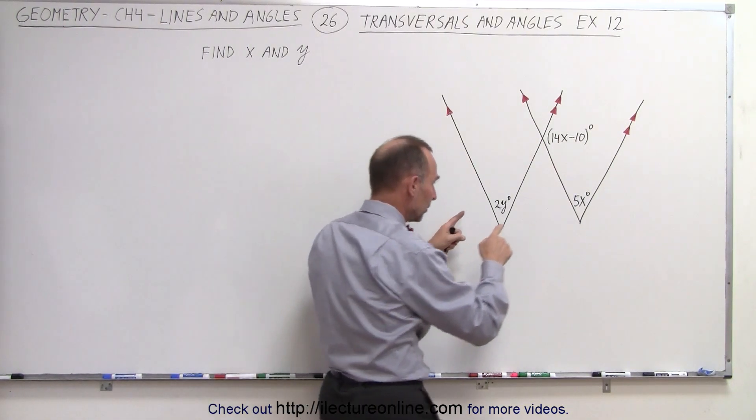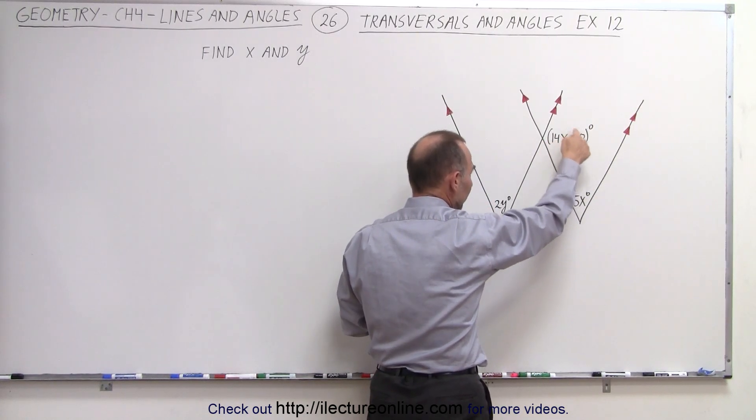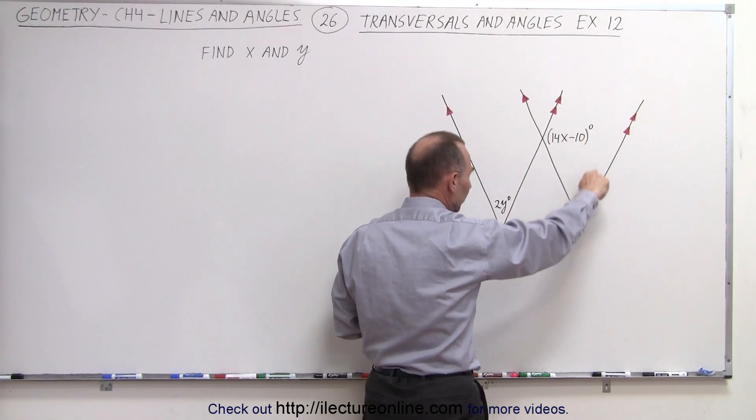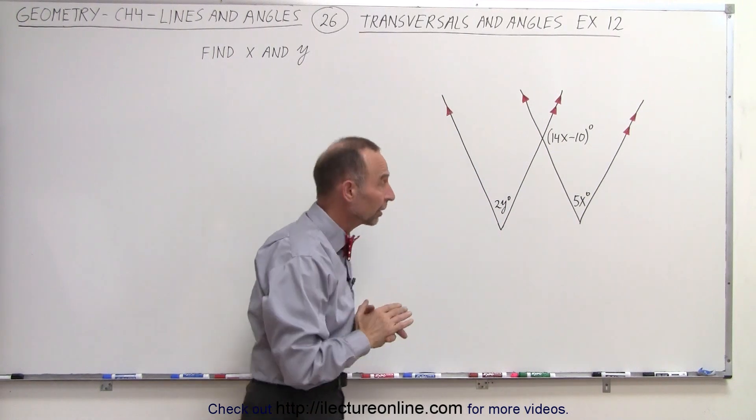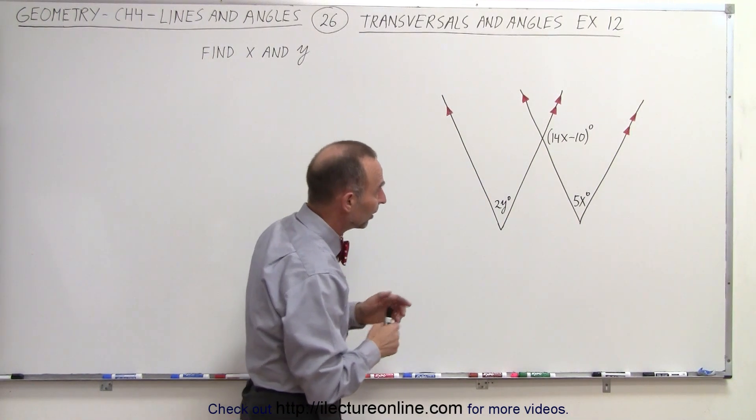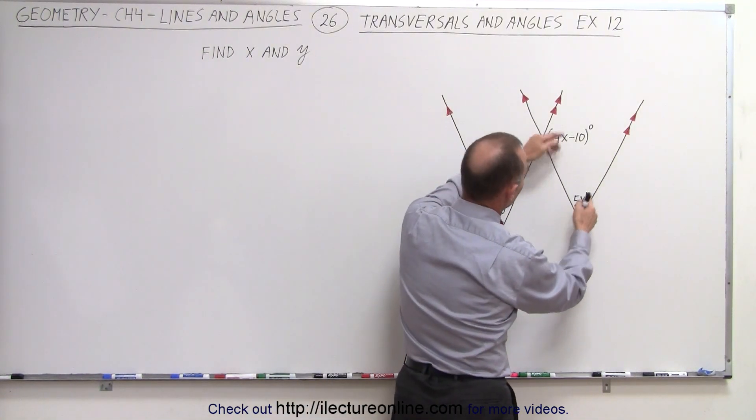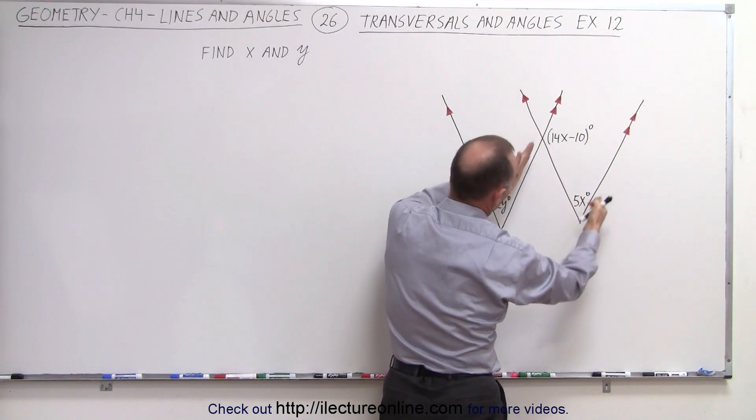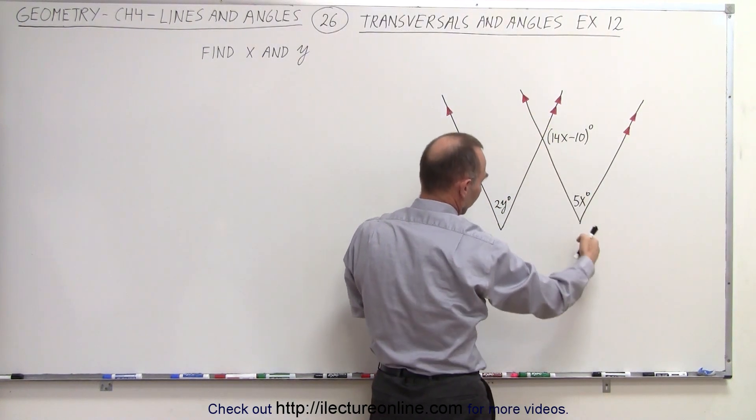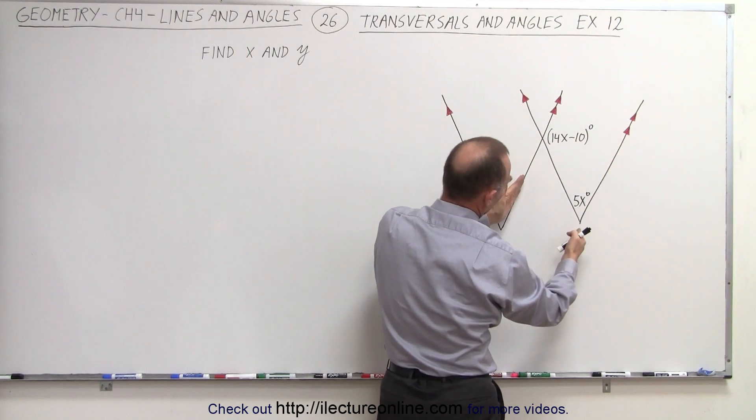And so how can we compare these to one another? Well, somehow through this indication right here, we should be able to work ourselves to this particular problem. But first, let's take a look at these two angles right here. We know that these are parallel to one another, so this line here becomes a transversal of those two parallel lines.